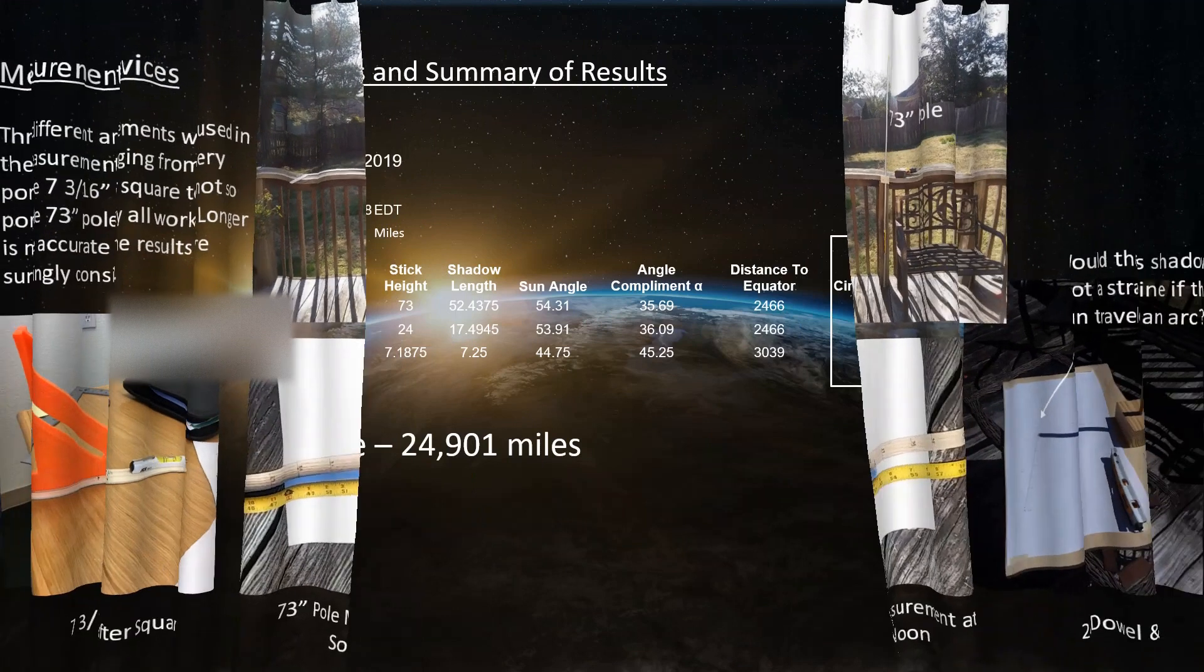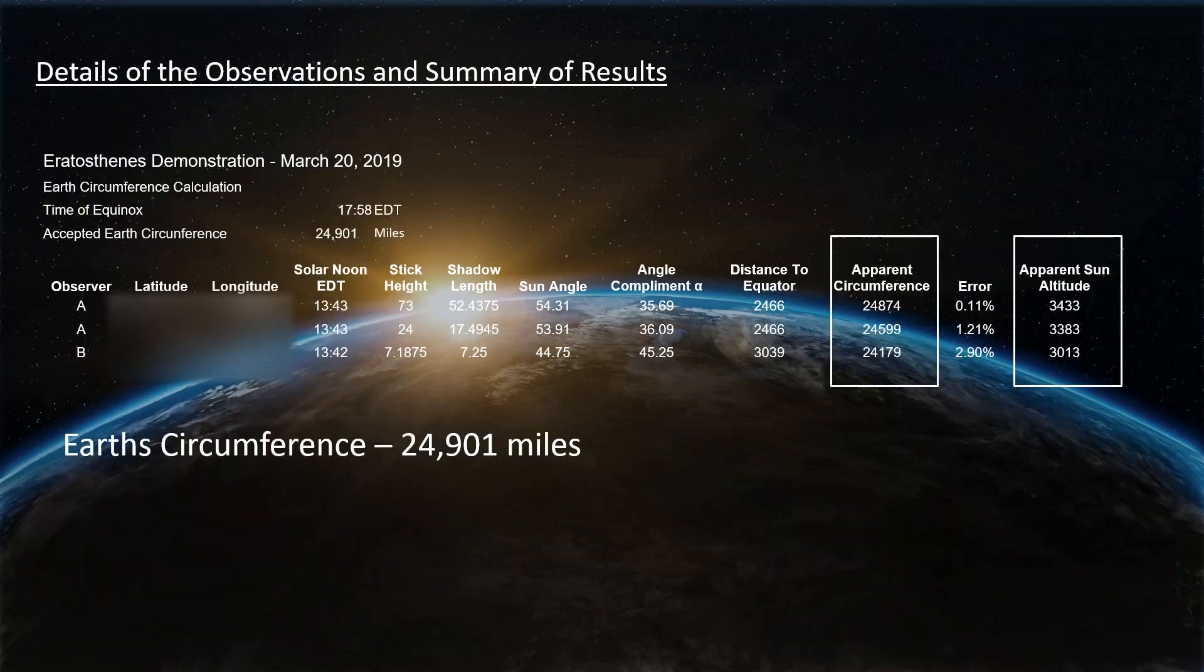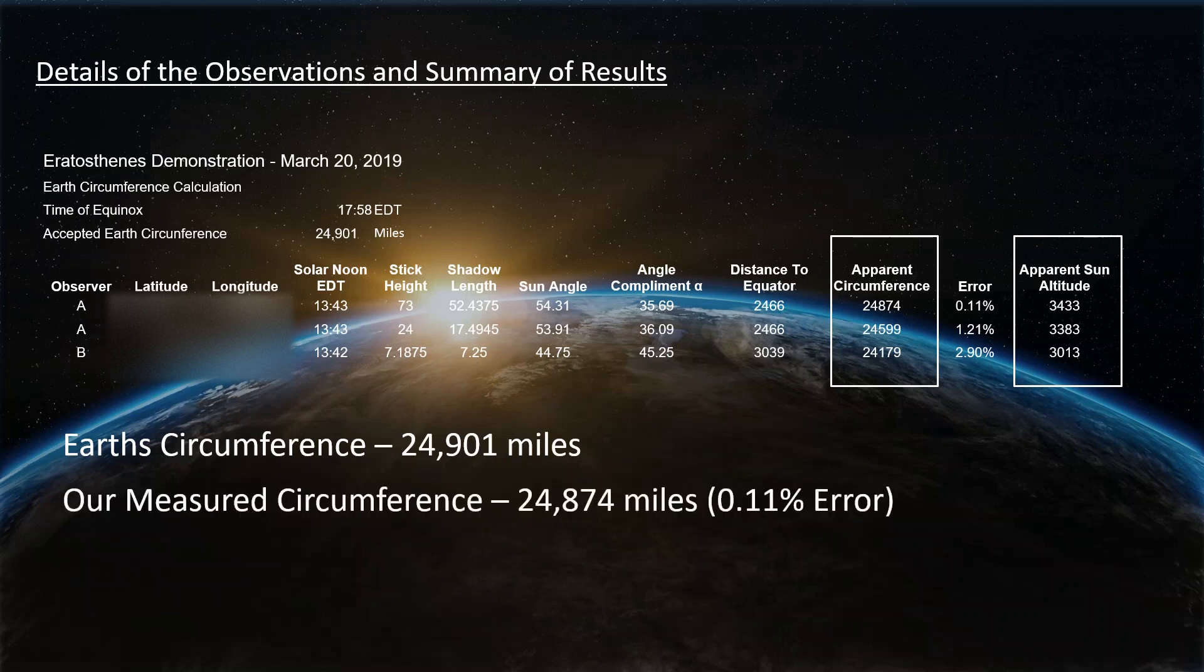Wait for it. Here come the results. Now I'm not going to bore everybody with all of these numbers. You're free to stop the video, pause it, and go through all of this stuff. Let me just cut straight to the chase. Earth's circumference is known to be 24,901 miles. Our measured circumference is 24,874 miles. That's less than a 30-mile difference. That's about a tenth of a percent error. I would call that a winner. Absolutely.